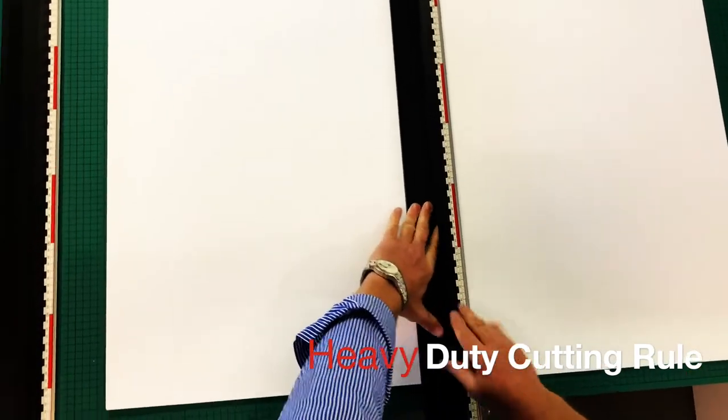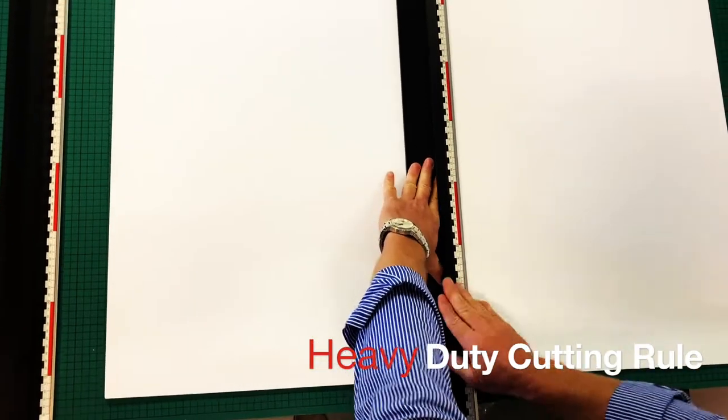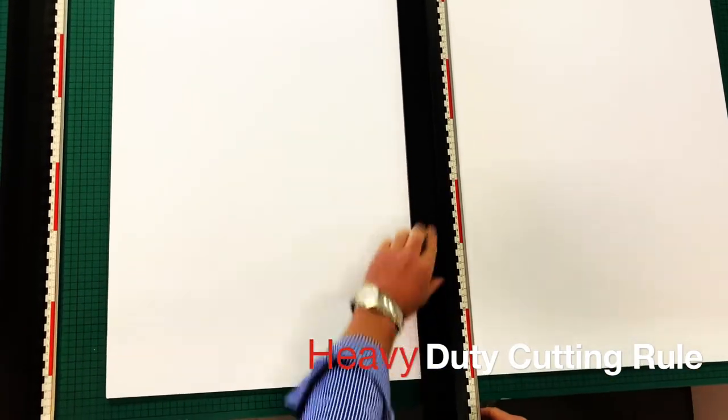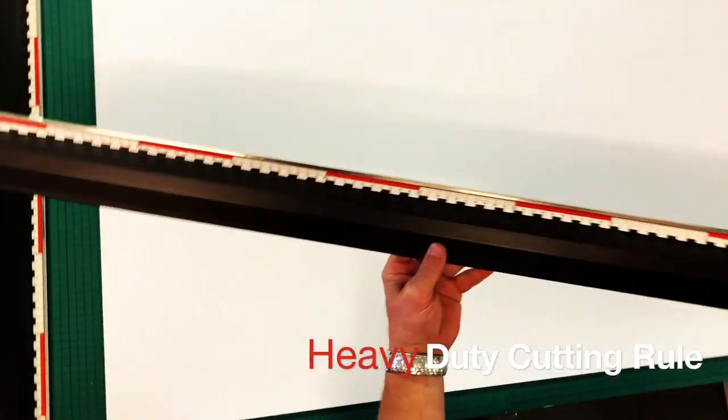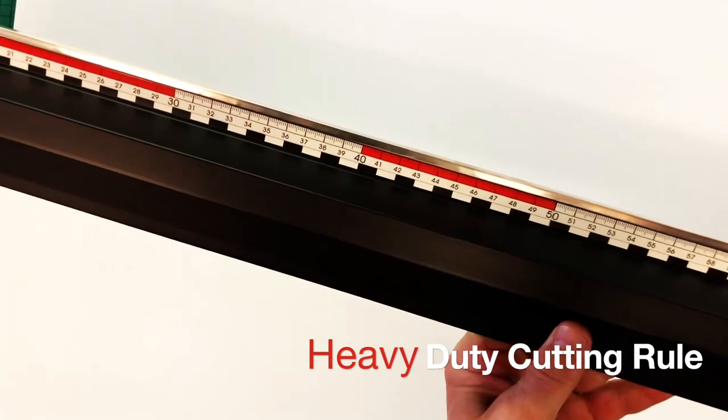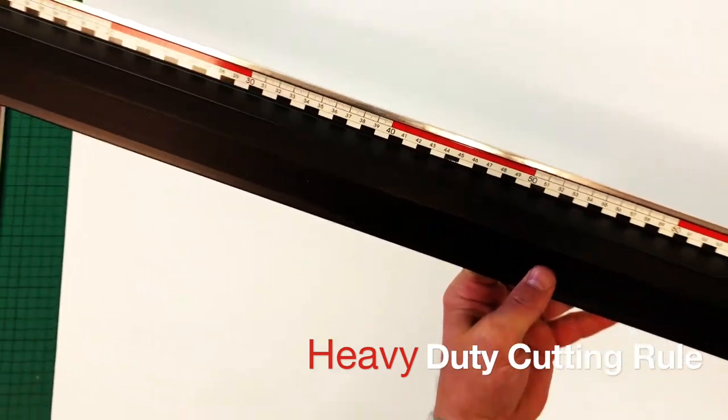The beauty of it is also it has a guardrail there so there's no way you can actually cut your fingers once that's behind there. It has got graduations in centimetres on there so it's easy then to actually work out dimensions and so on and so forth.